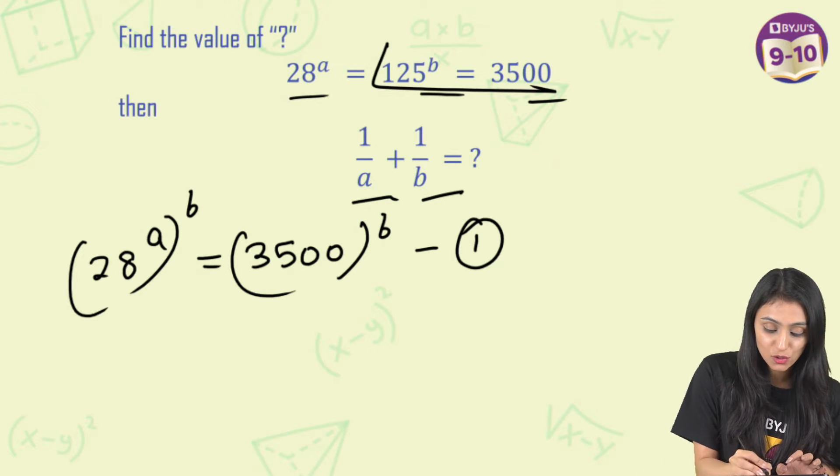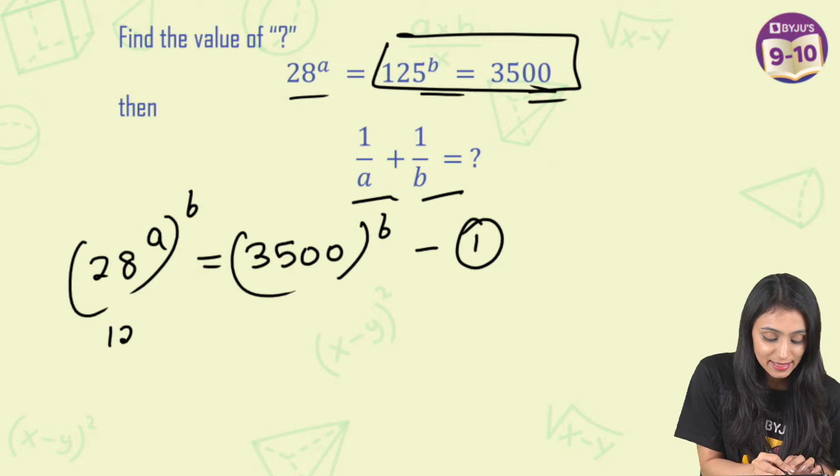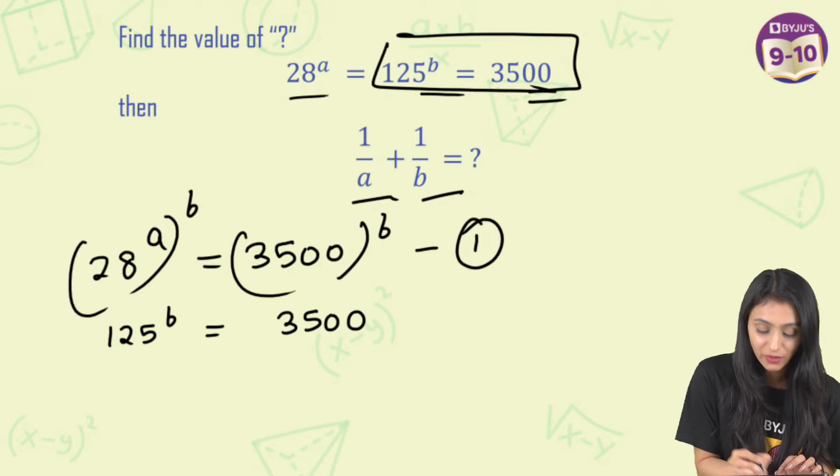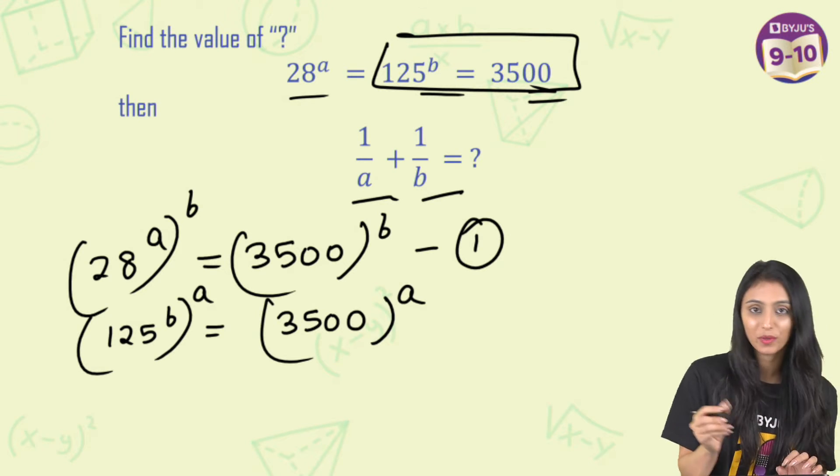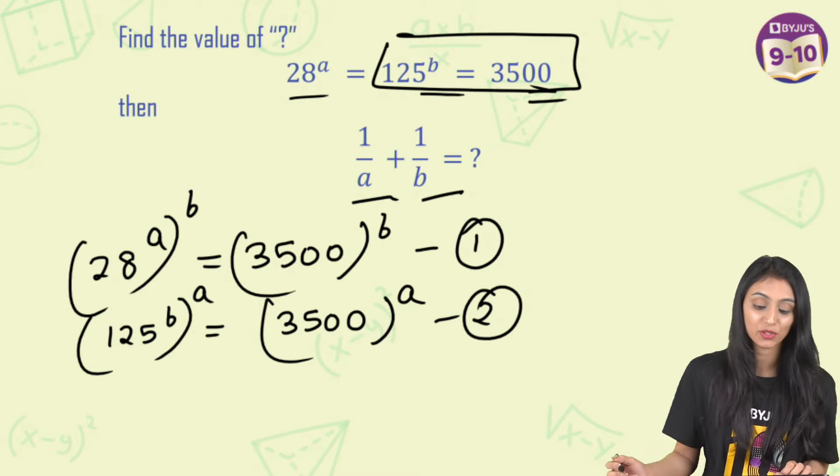Similar thing I'm going to do with another one also. Here this is also equal. I can say that 125 to the power B is actually equals to 3500. This is given to us. Now here if I take power A, because same thing I have to apply on both the sides. Let's mark this as equation number two.